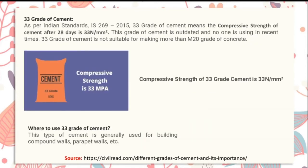Grade 33 cement: as per Indian Standard IS 269:2015, 33 grade of cement means the compressive strength of cement after 28 days is 33 N/mm². This grade is now outdated and not used in recent times. It is not suitable for making concrete above M20 grade. It is generally used for building compound walls, parapet walls, etc.